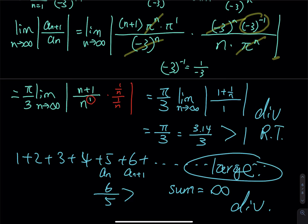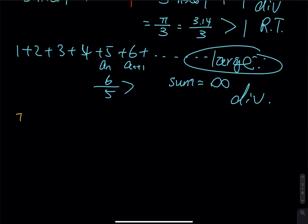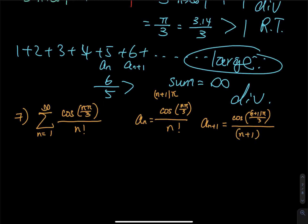Moving on to number seven. We have the summation from n=1 to infinity of cosine of n*pi/3, divided by n factorial. The current term is cosine(n*pi/3) divided by n factorial. The next term is cosine((n+1)*pi/3) divided by (n+1) factorial.